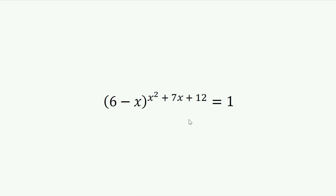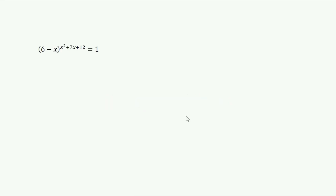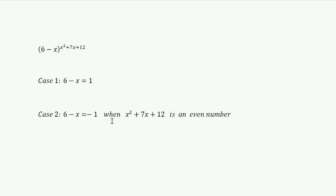To solve this problem, let's divide the solution into 3 different cases. Case 1: 6 minus x equals 1. Case 2: 6 minus x equals minus 1, when the power is an even number — that is, x squared plus 7x plus 12 is an even number. Case 3: the power of the equation becomes 0 — that is, x squared plus 7x plus 12 equals 0, when 6 minus x is not equal to 0.